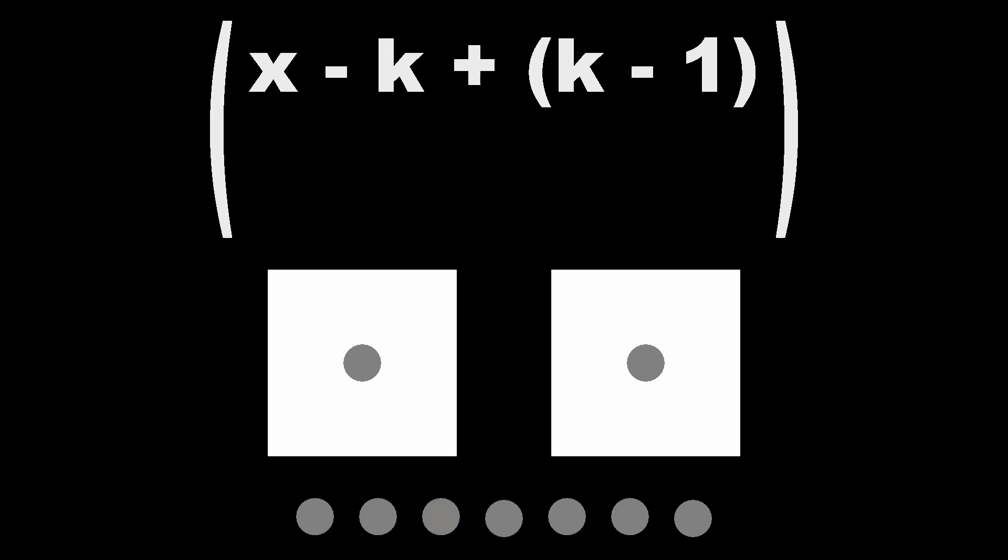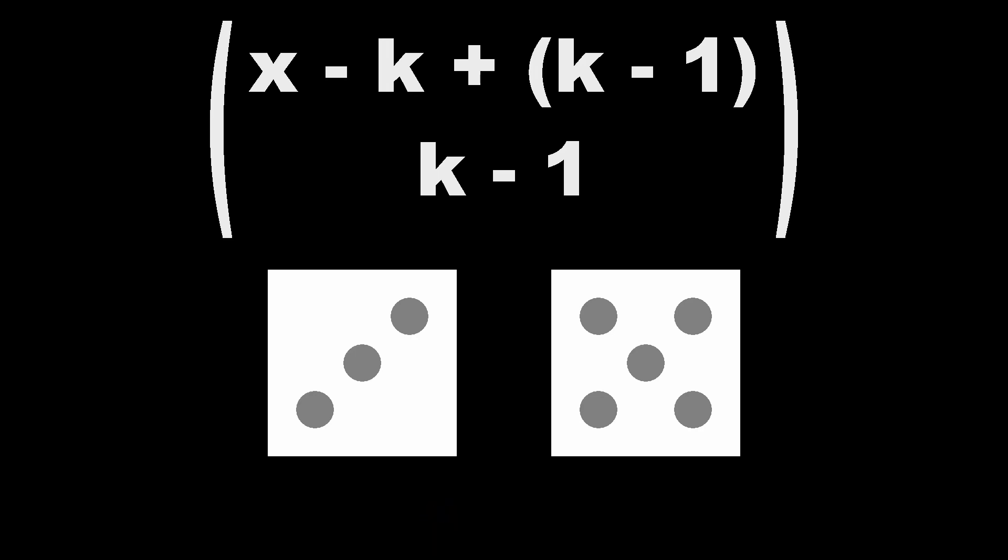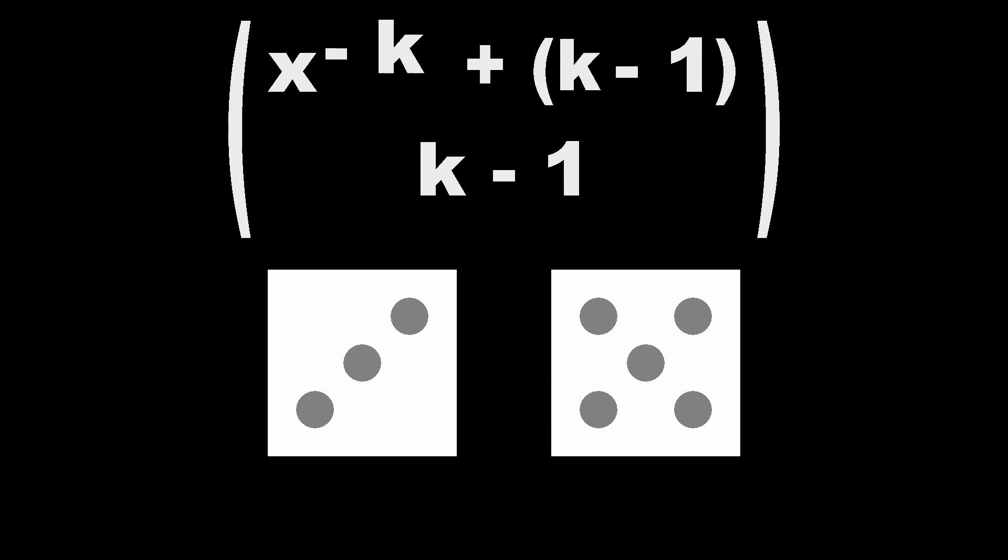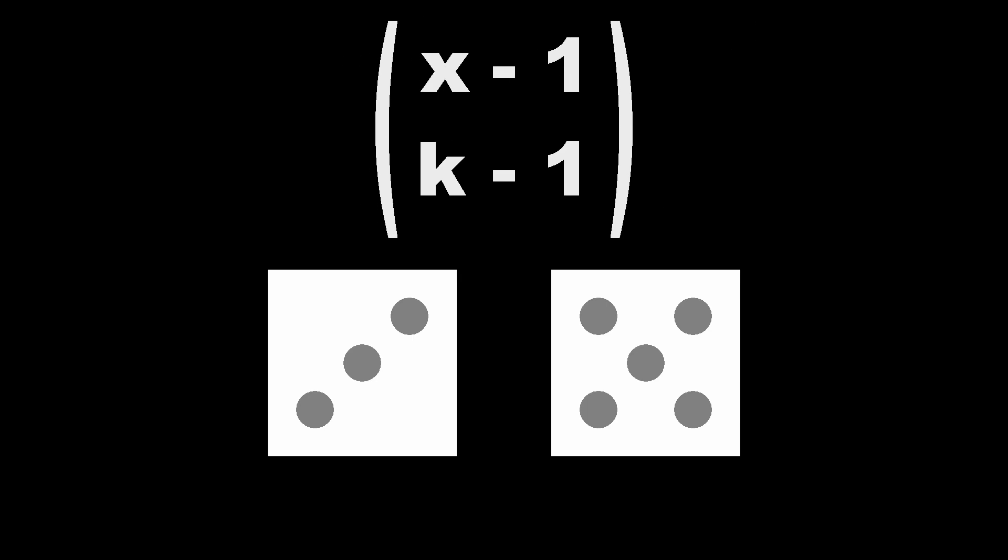Let's start with making sure there's at least one pip on each die. We can accomplish this, once we've lined up our pips, by just putting one pip from our line onto each face. Then, we can do what we did before, adding k-1 pips, coloring k-1 pips gold, using the golden pips as separators for the rest of the pips, and then throwing those golden pips out. If we simplify this, we see that we end up removing k pips at the beginning, but then we add all but one back in. This gives us a nice equation of x-1 choose k-1.